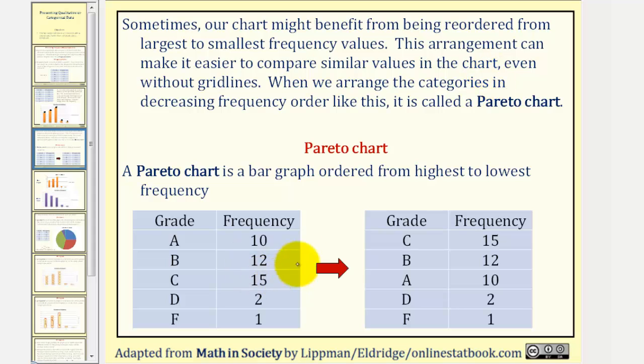So here's the original frequency table. If you want to reorder this from largest frequency to smallest frequency, we have to switch the A's and the C's, so that the highest frequency of 15 is first, followed by 12, 10, 2, and then 1.